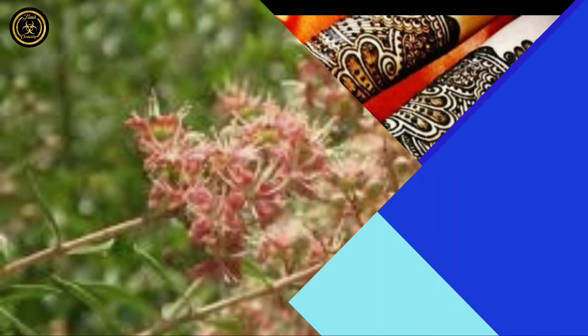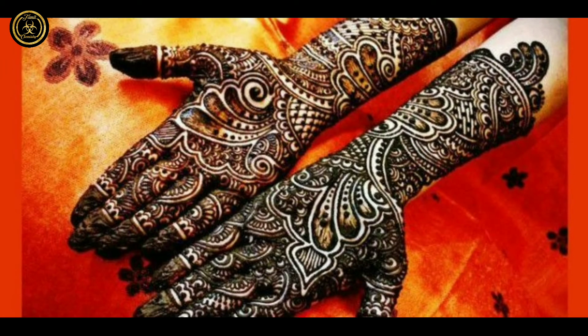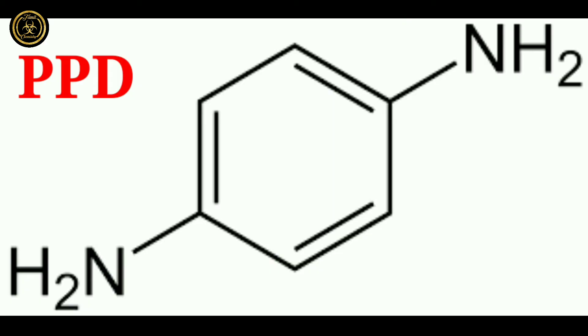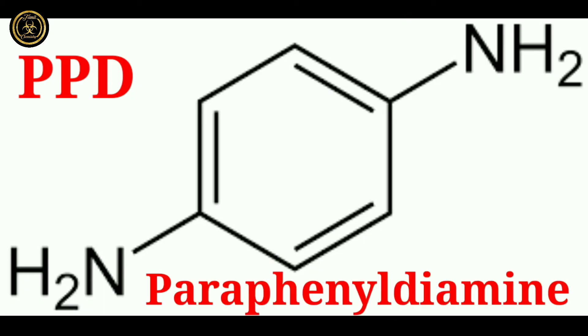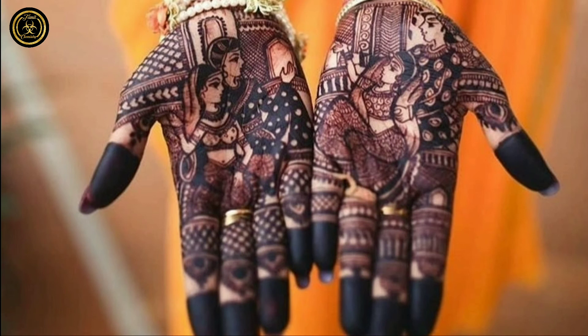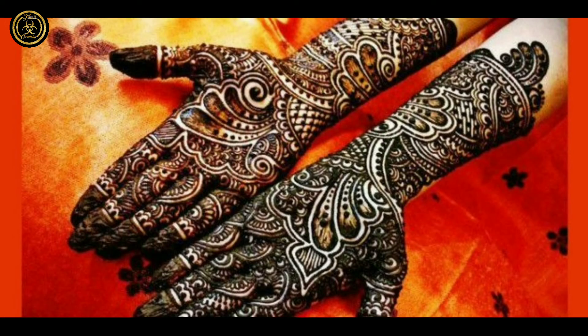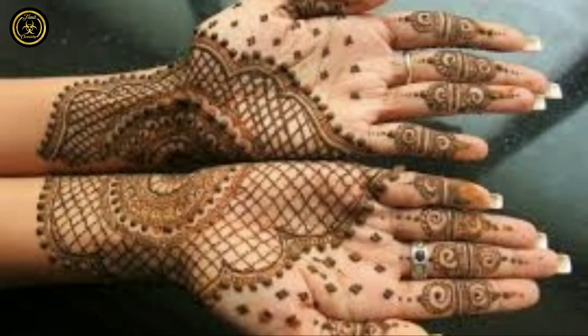If you want to use it as a theme, we use it as a theme — PPD, Paraphenylenediamine. I use these compounds; for example, they are in the C-Kirma. I am a part of the C-Kirma. He will be able to get irritations. He will be able to get a lot of people who are in a good mood.